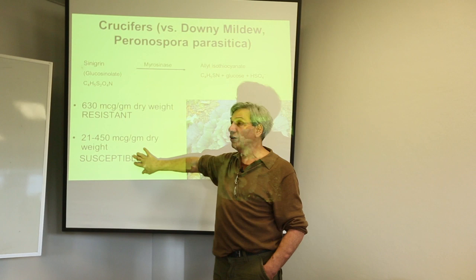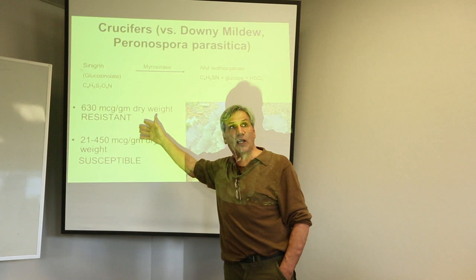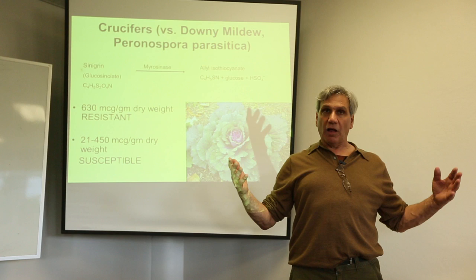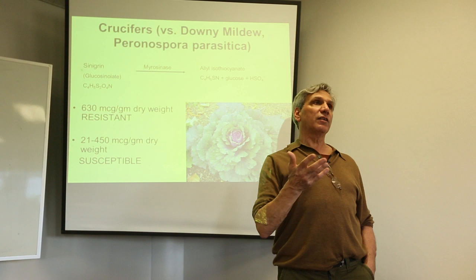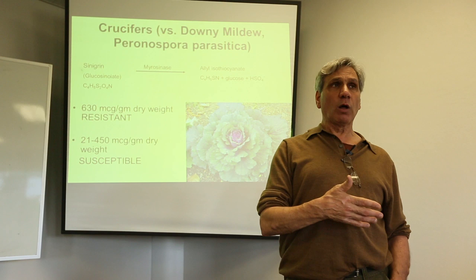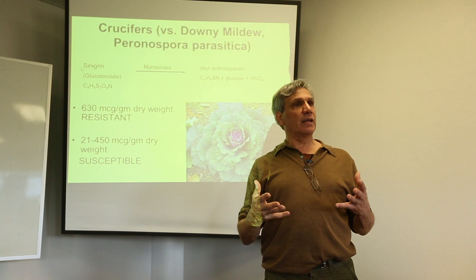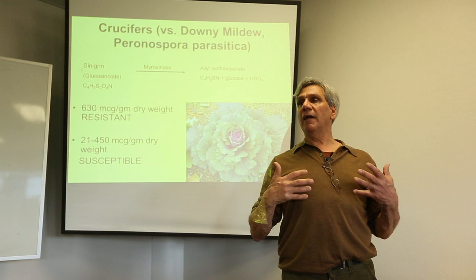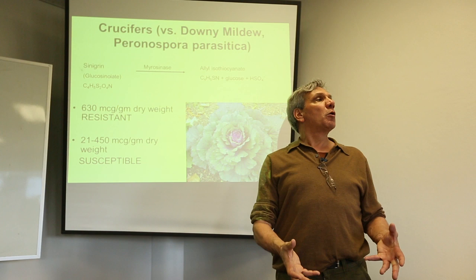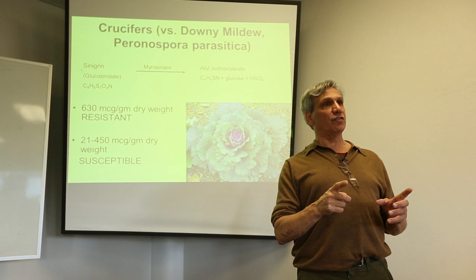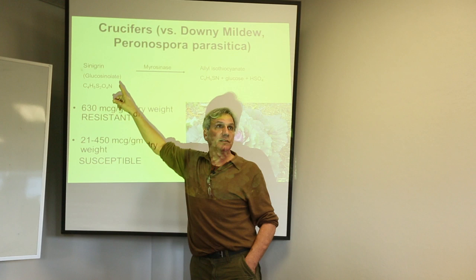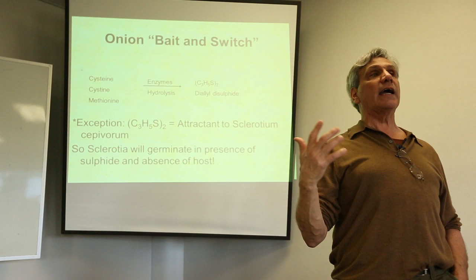The heirloom variety with 630 micrograms per gram of glucosinolate was very resistant, while the new hybrid variety was not. Old varieties have lost a lot of their innate plant protective compounds in the pursuit of size and faster growth. University of Texas work on disappearing nutrient density shows that hybridizing for faster growth creates a dilution effect — plants can only take up so much at any given time, and forcing them bigger and faster reduces their ability to bring in nutrient density. Those minerals are the raw materials to make plant secondary metabolites.